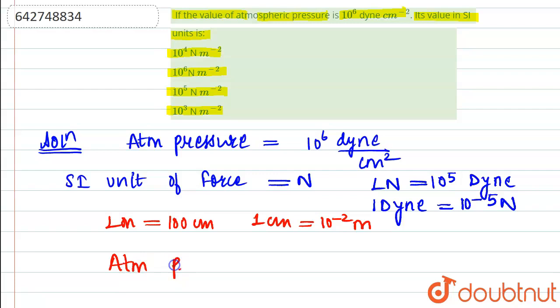we replace in the above atmospheric pressure the respective units. So new atmospheric pressure becomes 10 to the power 6 into 10 to the power minus 5 N.